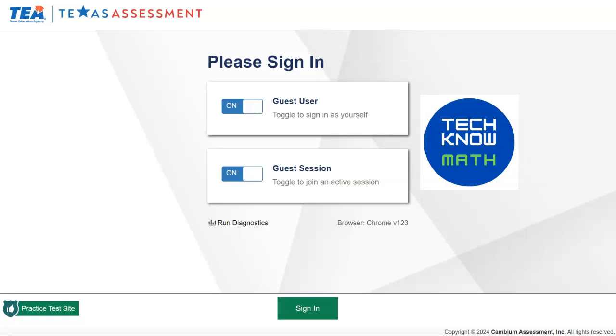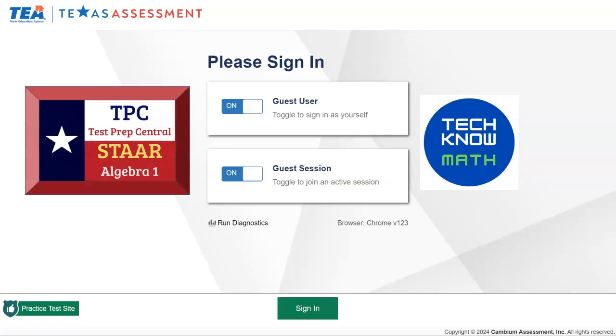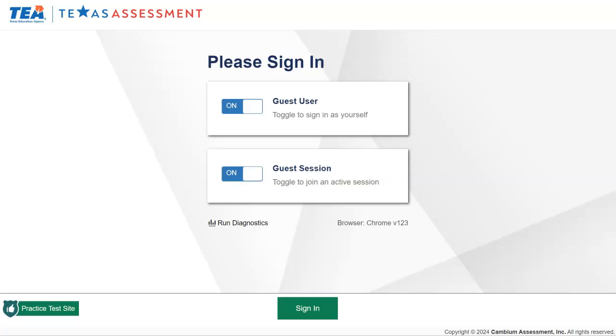Welcome back. This is TPC Star Algebra 1 End of Course Training for the Desmos Graphing Calculator. If you go to your show notes, the link to the page you see is in the show notes. Click the link, and when you come back, click this green button that says Sign In.